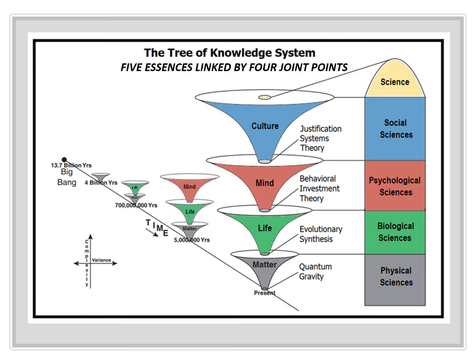The four dimensions are closely connected to another key implication of the Tree of Knowledge: the joint points. Quantum gravity represents the merger of quantum mechanics and general relativity, which, if successful, would be a complete theory of the matter dimension. The evolutionary synthesis represents the merger of natural selection and genetics — a partial unification of biology, but incomplete because we still do not know exactly how cell physiology and epigenetics connects. Behavioral investment theory is a meta-theoretical framework for the animal mental plane of existence, and justification systems theory is a meta-theoretical framework for what gave rise to human self-consciousness and the evolution of the culture-person plane of existence.